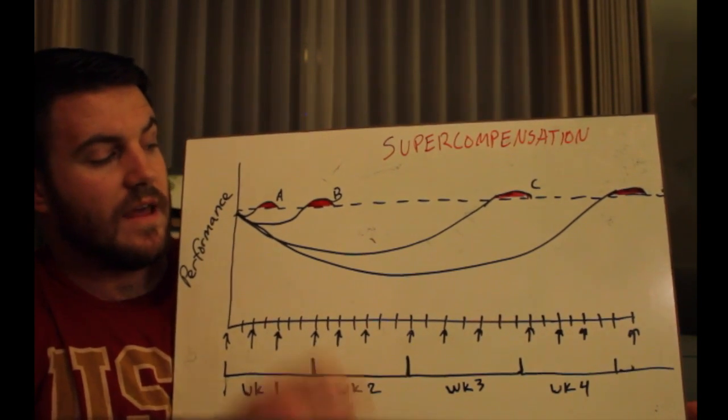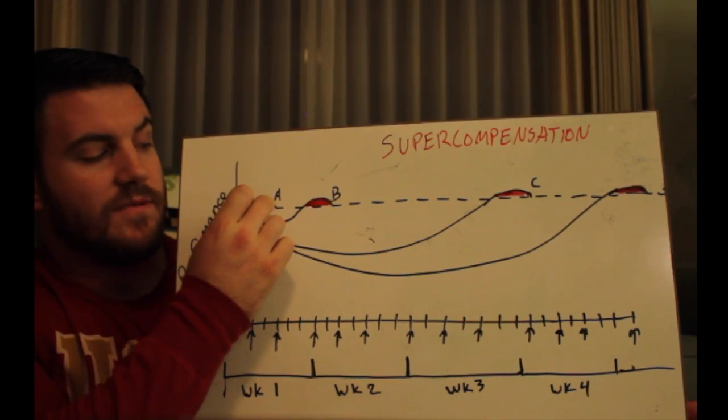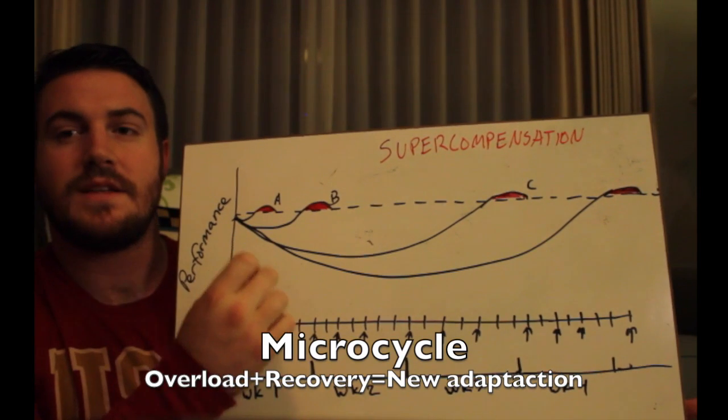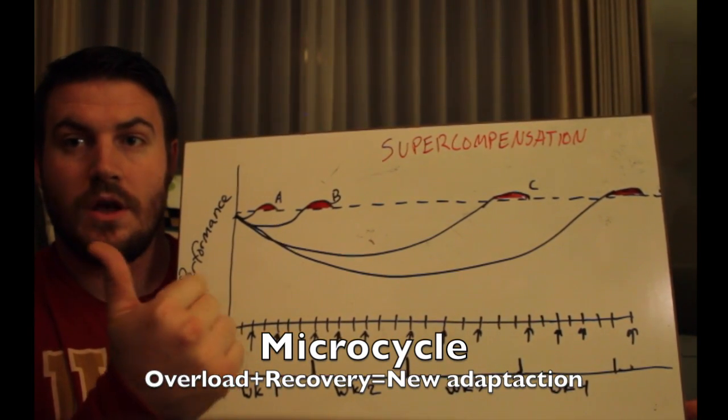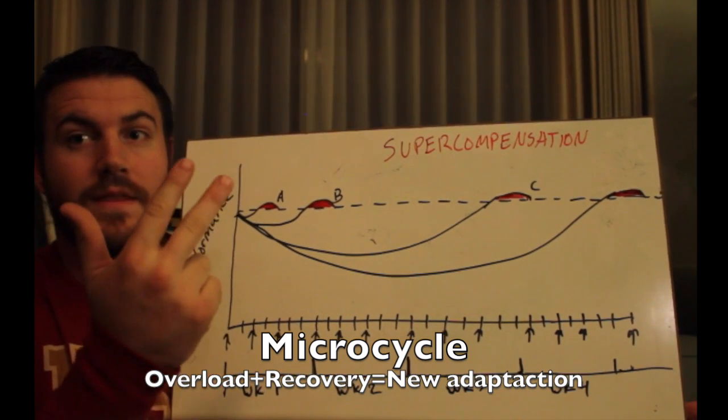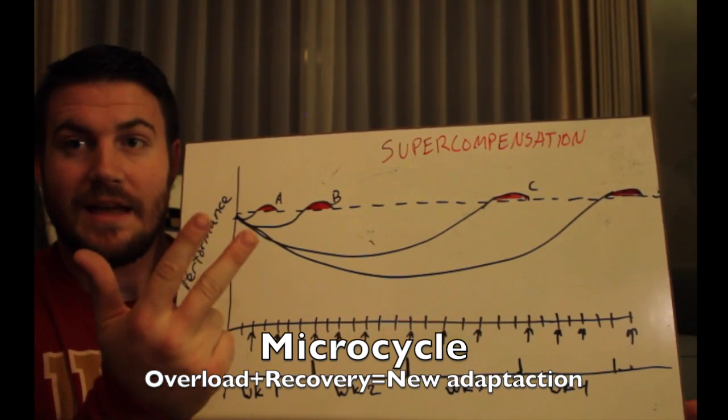I also want to say that a microcycle is defined as the amount of time that it takes to have an overload event that disrupts homeostasis, enough time for you to recover, and then manifest or display that strength.